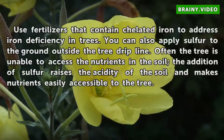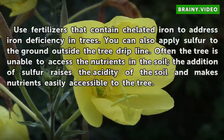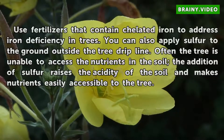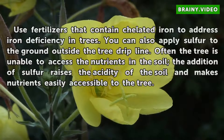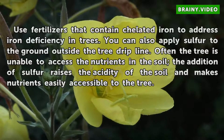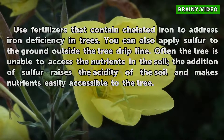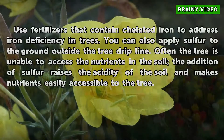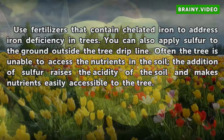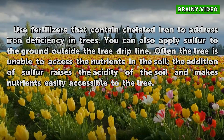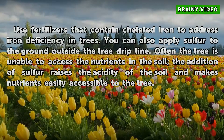Use fertilizers that contain chelated iron to address iron deficiency in trees. You can also apply sulfur to the ground outside the tree's dripline. Often the tree is unable to access nutrients in the soil; the addition of sulfur raises the acidity of the soil and makes nutrients easily accessible to the tree.